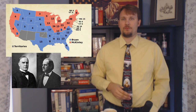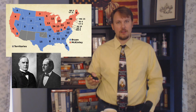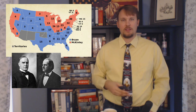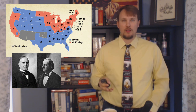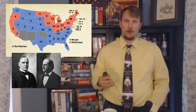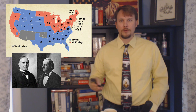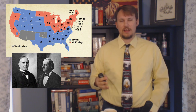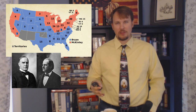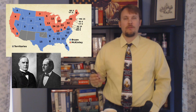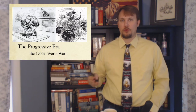Bryan was using Christian metaphors to argue that a gold-only standard mistreated people by helping only the rich. McKinley ultimately won the election with 51% of the vote, carrying the industrial states and much of the Midwest, while Bryan carried the South. The election of 1896 was the last gasp of the Populist Party — they faded from the American scene.